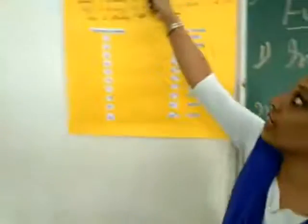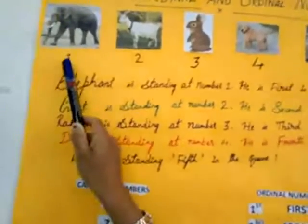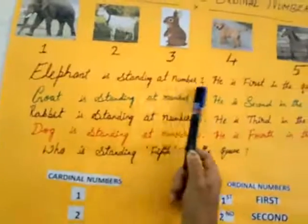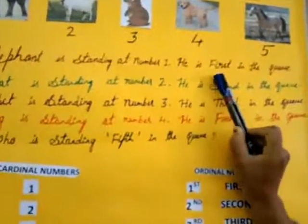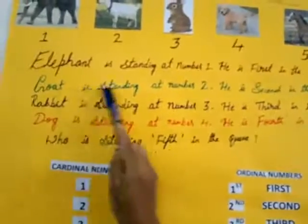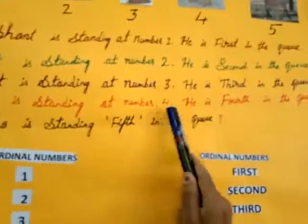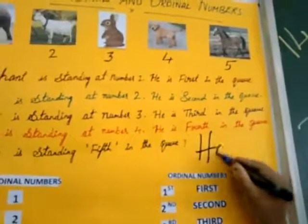Let's see an example. We have elephant, goat, rabbit, dog, and horse. Elephant is number one — he is first in the queue, so the position is ordinal and the count is cardinal. Goat is number two — second in the queue. Rabbit is number three — third. Dog is number four — fourth. Who is standing fifth in the queue? Yes, horse. Write horse: H-O-R-S-E.